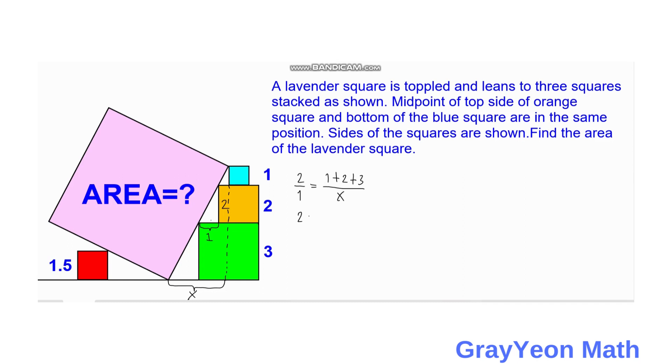2 is equal to 6 over x, so x is equal to 6 over 2, so x is equal to 3 units.